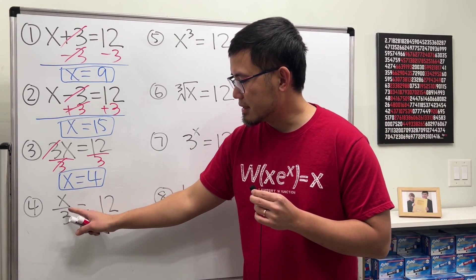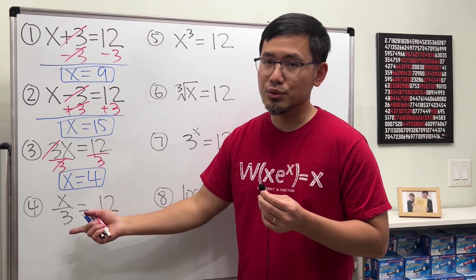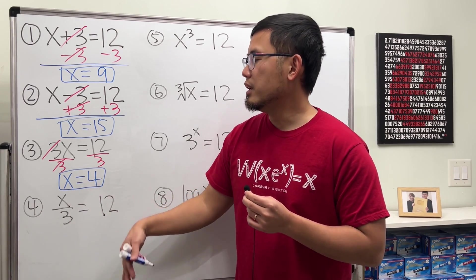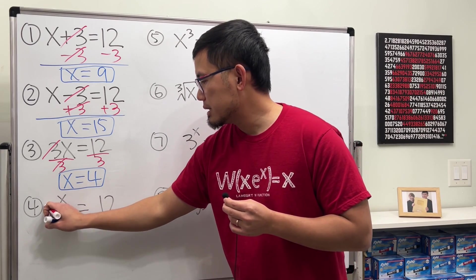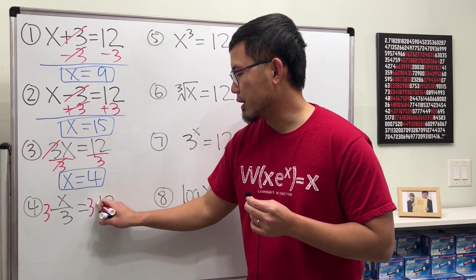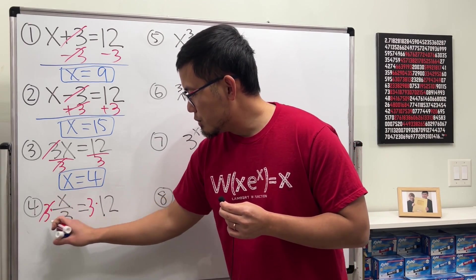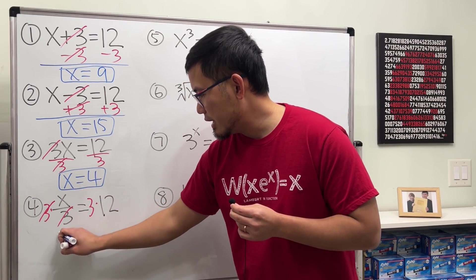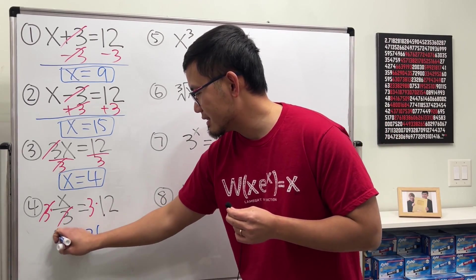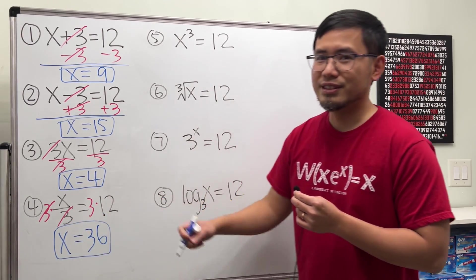Next, we have x divided by 3, right? x over 3. And that's equal to 12. The opposite of division is multiplication. Let's put down multiply by 3 right here and multiply by 3 right here. This 3 and that 3 will cancel. And we just get the x by itself. And that's equal to 3 times 12, which is 36.